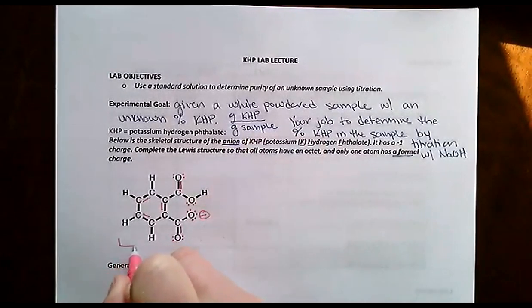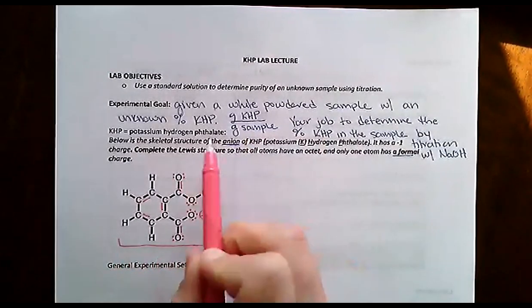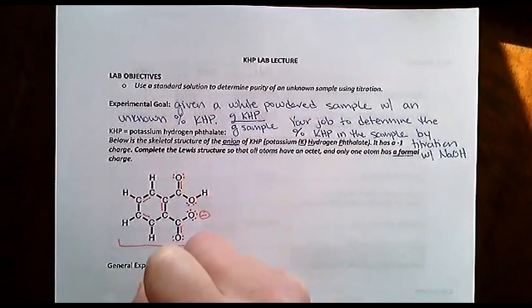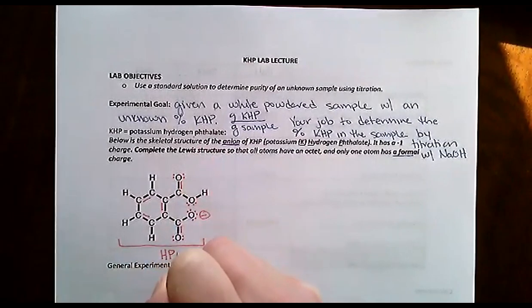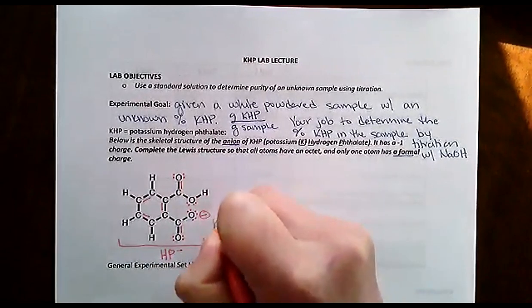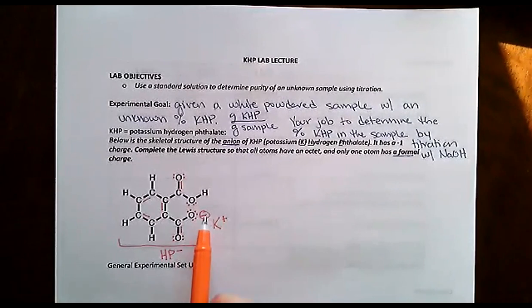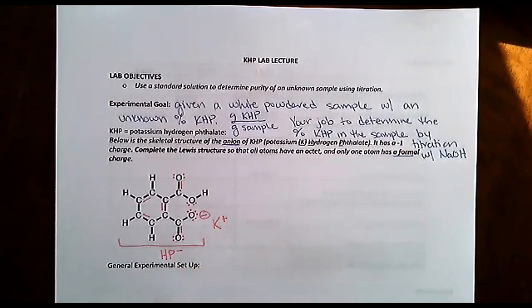This oxygen on the end has three lone pairs to complete its octet. Remember formal charge is the number of valence electrons an atom has as a neutral atom, which is six for oxygen, minus how many electrons formally belong to it. You count lone pairs as two and bonds as one. So this oxygen has a minus charge.